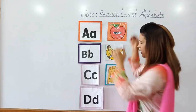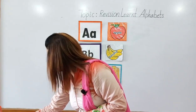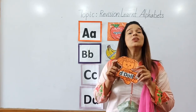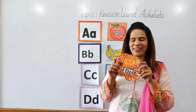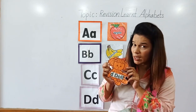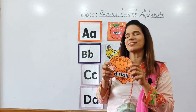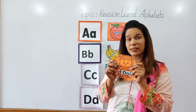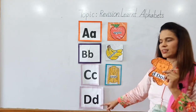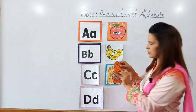Apple. Very good. Now tell me, what is this? It is doll. What is this? Doll. Very good. Now which sound is coming in doll? D sound. Which sound is coming? D sound. So we will paste it with the D sound. Where is D sound? Here is D sound. We will paste it with D sound.